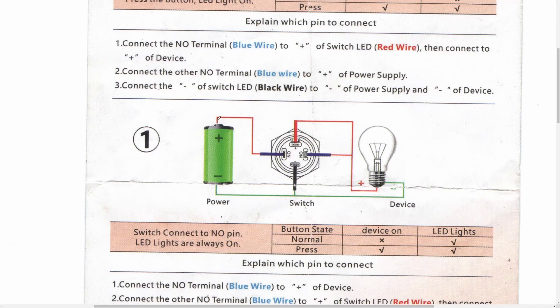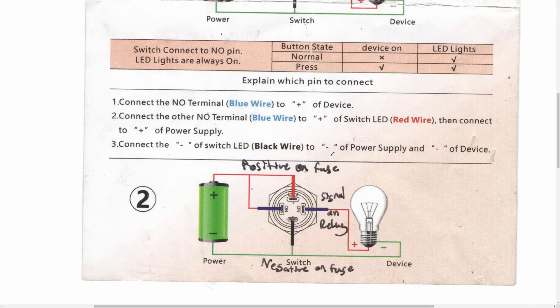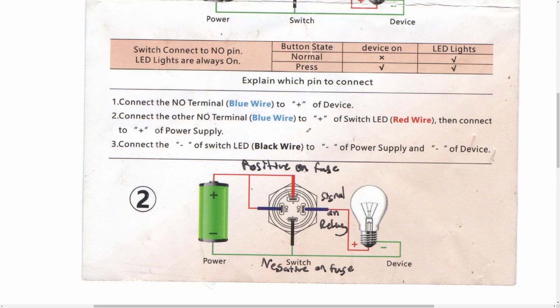So in this case, this is going to our add-a-fuse in the fuse panel. And then your negative of the switch is going to be connected all the way back to your fuse panel, or it can be grounded to a body ground.